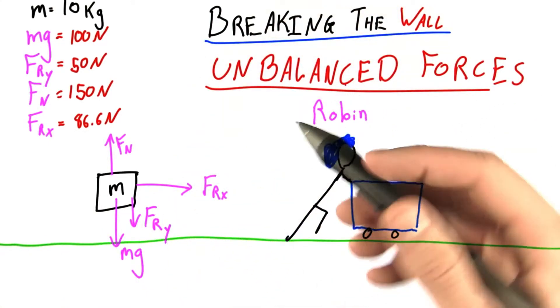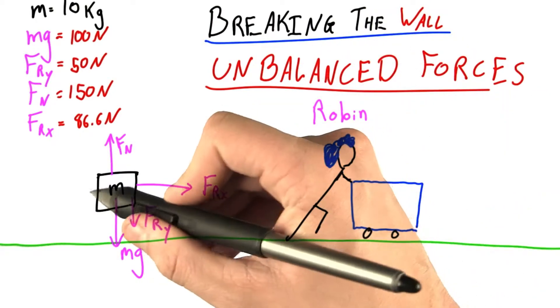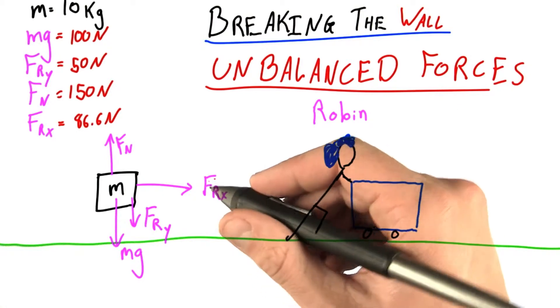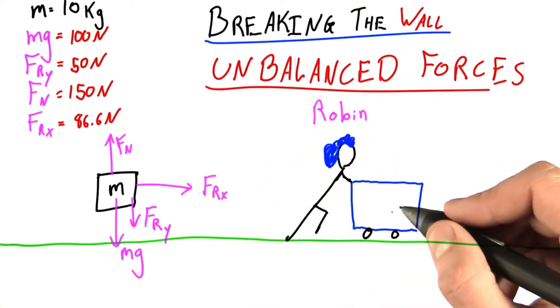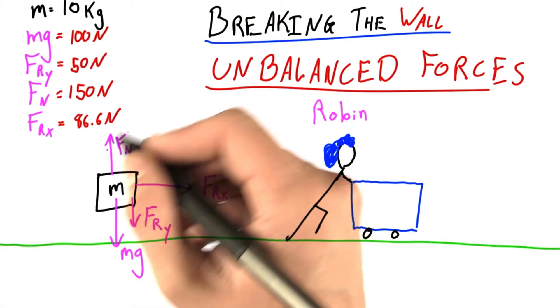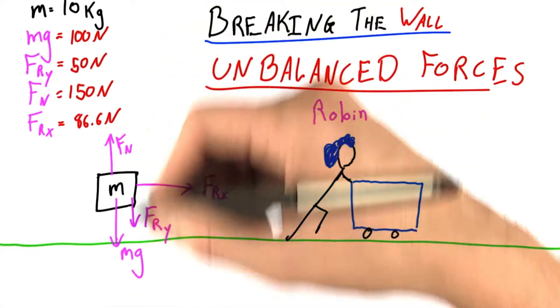And when I say unbalanced, what I mean is that this force doesn't have a companion force to the left. We are now entering the world of acceleration. Now, how do we solve the problem of what is this cart's acceleration going to be? We already know that these two forces balance this force. So there's not going to be any vertical acceleration.